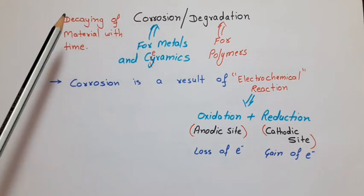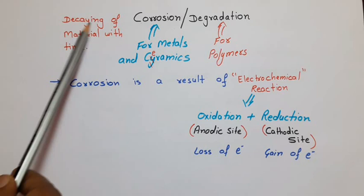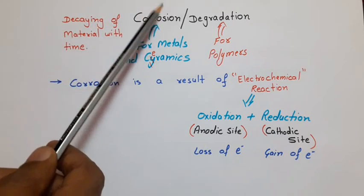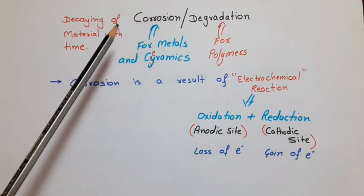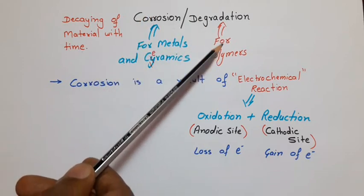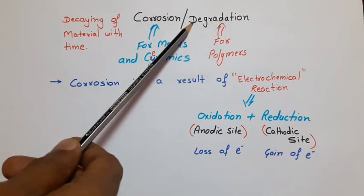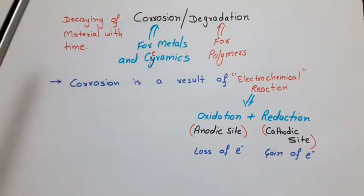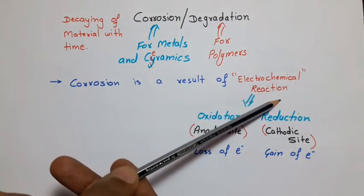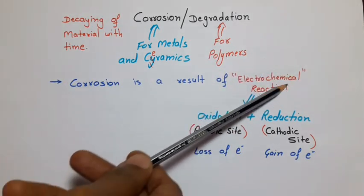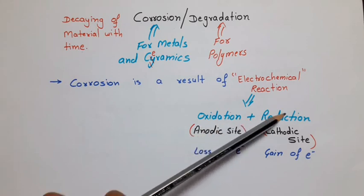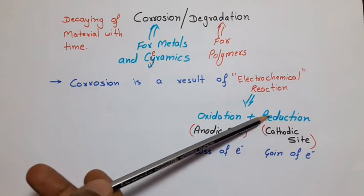In simple language, we can say decaying of material with time is known as corrosion. In case of metals and ceramics, it is known as corrosion. But in case of polymers, it is known as degradation. Now, corrosion is the result of electrochemical reaction. Electrochemical reaction is that reaction which contains oxidation as well as reduction.